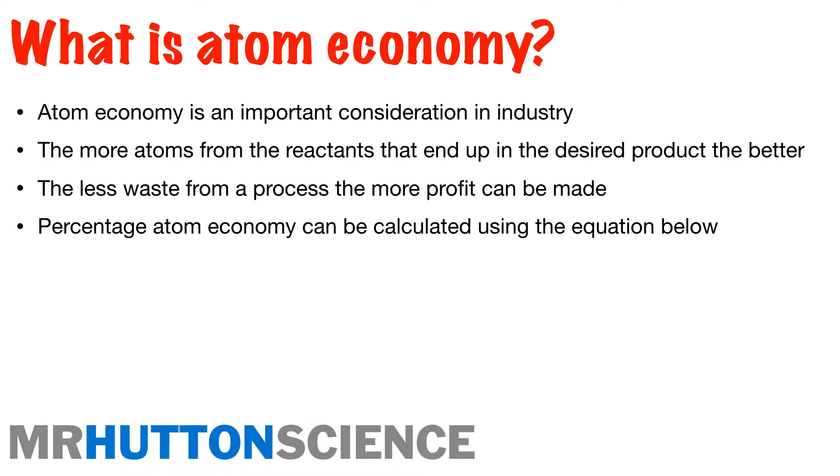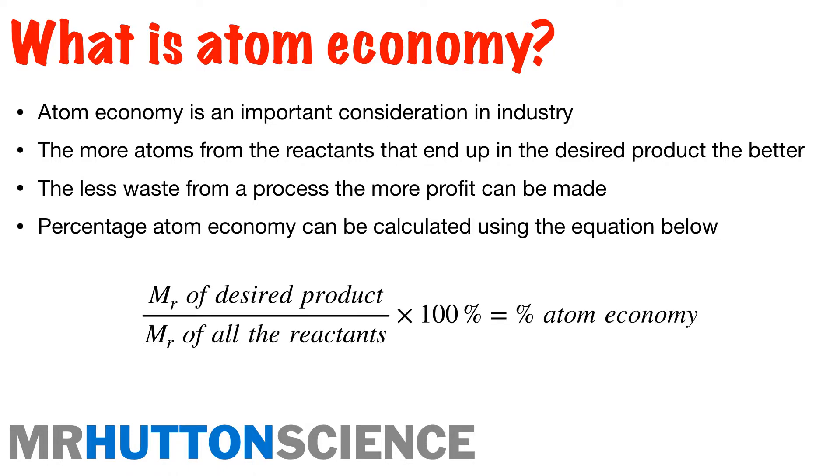So percentage atom economy can be calculated using the equation just here. The MR, the relative molecular mass or relative formula mass of our desired product divided by the relative formula mass of all of the reactants. It's important you remember it's all of the reactants. Many students often go wrong there and they don't actually put all of the reactants down. Times 100 to give you your percentage atom economy.